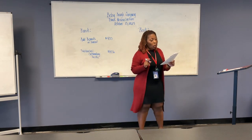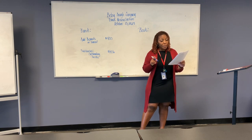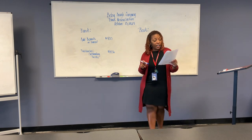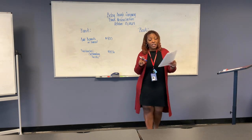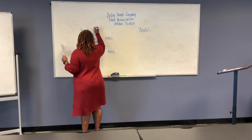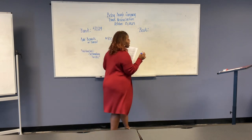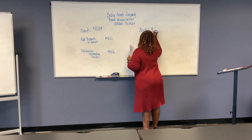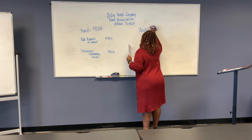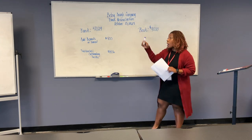The ending balances on the statement and in the company's books are determined. The ending bank statement balance is $10,129, whereas the books show $9,000. So we have our balances: the bank side is $10,129 and the book side is $9,000. This is why we need to do the bank reconciliation — because they don't equal.